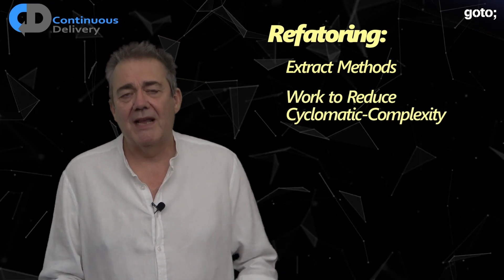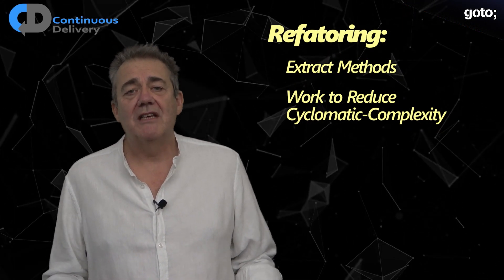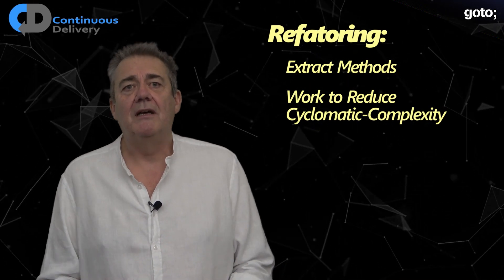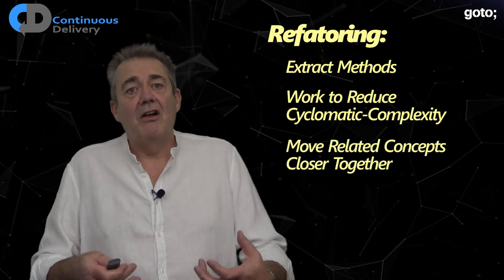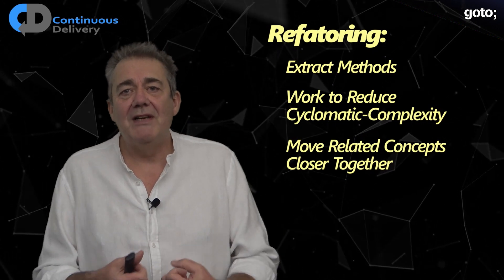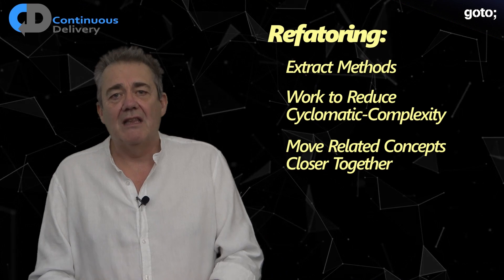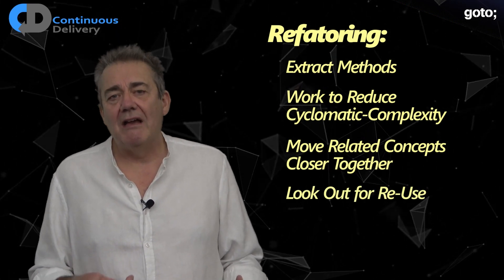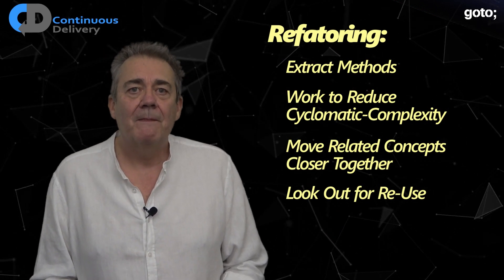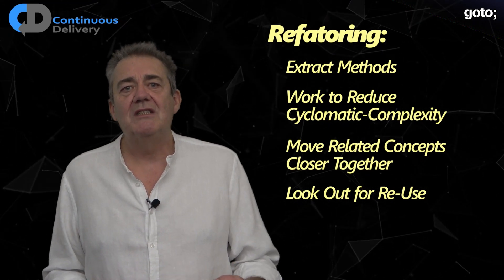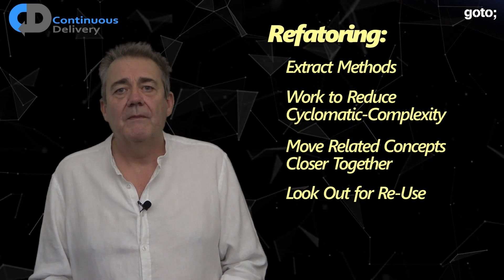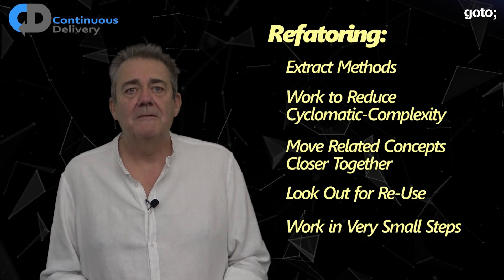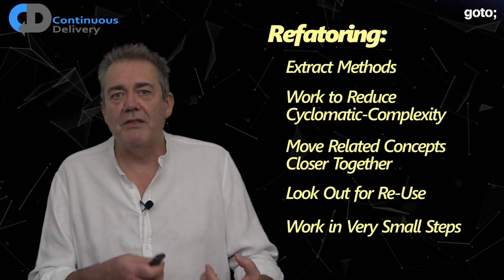After that comes work to reduce the cyclomatic complexity of our code — extract conditional and loop blocks as methods. This allows us to further semantically declutter the code. We can work iteratively in tiny little steps. Move related concepts closer together in the code, particularly in long methods — identify related ideas and move them physically closer together, then extract that block as a method. As you apply these techniques, keep a lookout for chances to reuse the new bits of code. The secret to refactoring is to work in small, safe steps — small steps allow us to make changes with confidence.